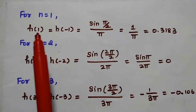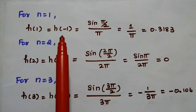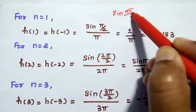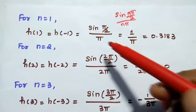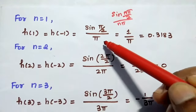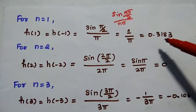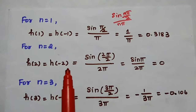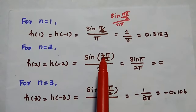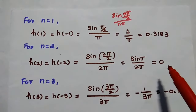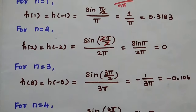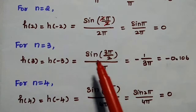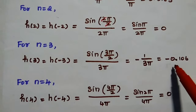Since the filter is symmetric, h(1) = h(-1) = sin(π/2) / π = 1/π = 0.3183. For n = 2: h(2) = h(-2) = sin(2π/2) / 2π = sin(π) / 2π = 0 / 2π = 0. For n = 3: h(3) = h(-3) = sin(3π/2) / 3π = -1 / 3π = -0.106.